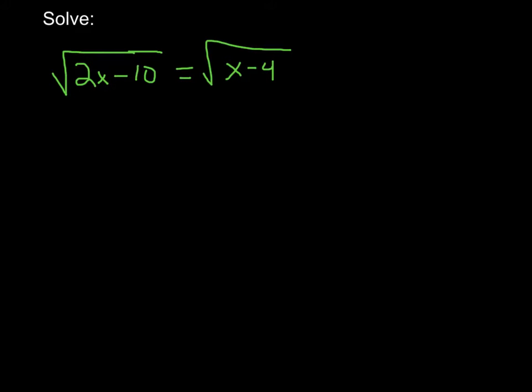We're solving this radical equation for x. If we look at this one, it's a little bit unique because we have a square root sign on both sides of the equal sign. When we have that, the goal is to get rid of those.